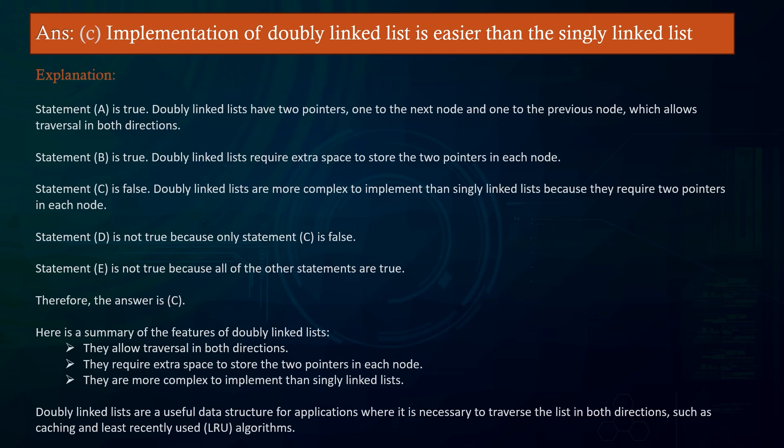Answer: Implementation of doubly linked list is easier than the singly linked list. Explanation: Statement A is true — doubly linked lists have two pointers, one to the next node and one to the previous node, which allows traversal in both directions. Statement B is true — doubly linked lists require extra space to store the two pointers in each node.